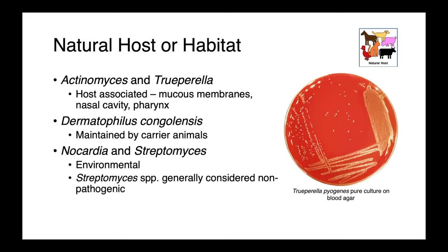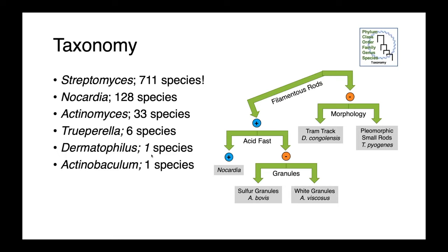Streptomyces species are generally considered non-pathogenic, so we aren't going to talk about them very much in this lecture. There are, however, many species of Streptomyces — 711. We've got 128 Nocardia species, 33 Actinomyces — that's the genus Actinomyces within the order. Six species of Trueperella, one of Dermatophilus, and one Actinobaculum.